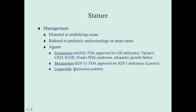Luprolide, also known as Lupron, is used for precocious puberty. In these children, if precocious puberty is not treated, their growth plates will close and they'll actually be shorter than their potential height. You can have a child who winds up with short stature but grew really fast early on — these are typically the precocious puberty cases.